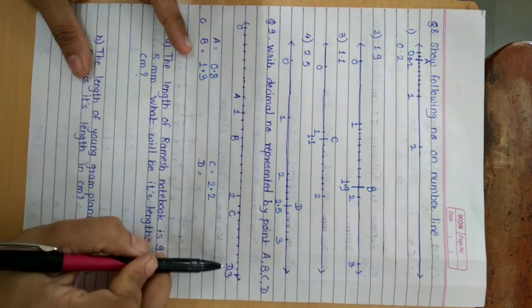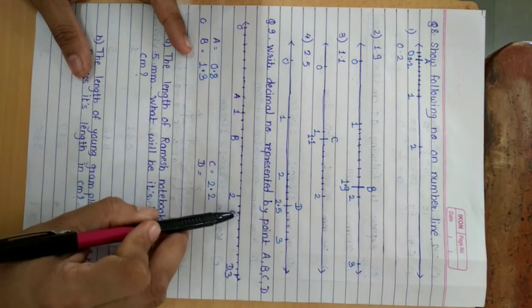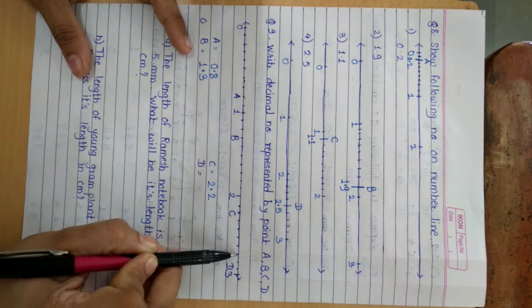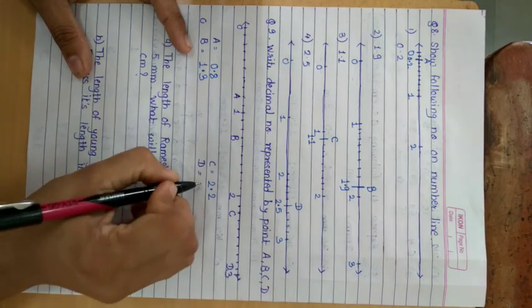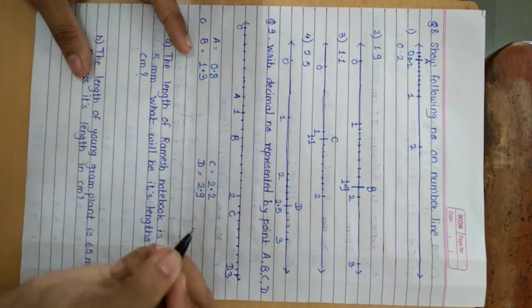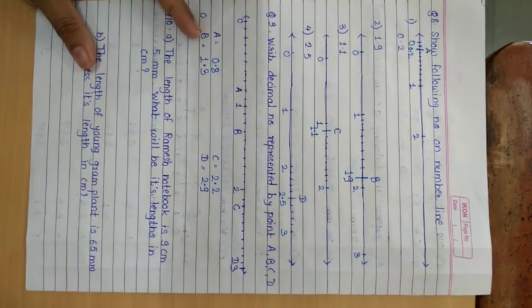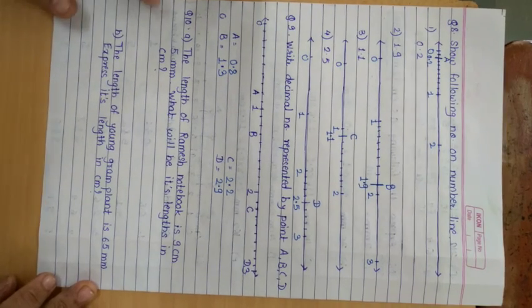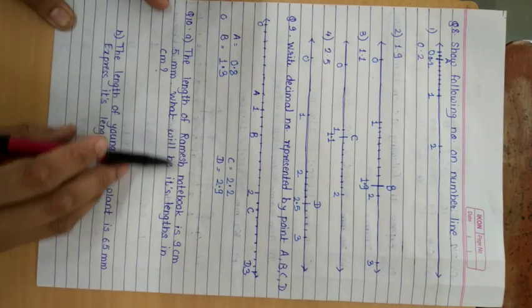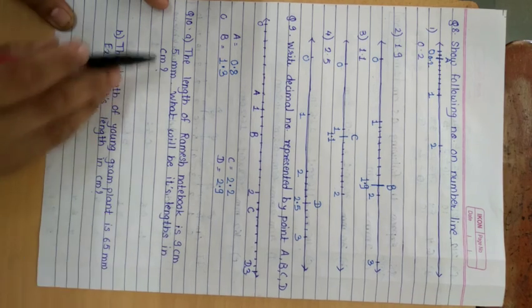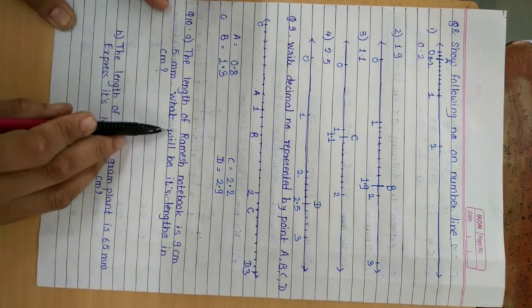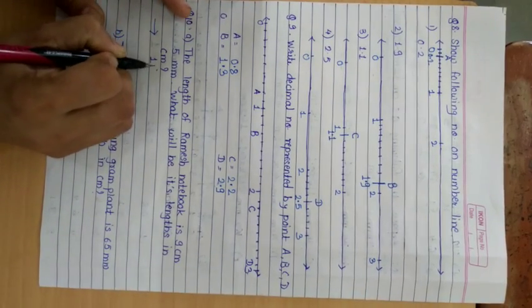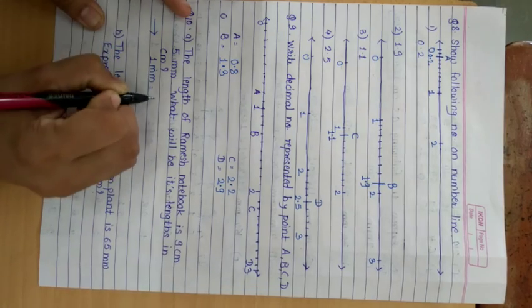And point D lies between 2 and 3 — counting: 2.1, 2.2, 2.3, 2.4, 2.5, 2.6, 2.7, 2.8, 2.9. So point D will be shown by 2.9. Is it easy? Now we will go to the last question of this exercise: The length of Ramesh's notebook is 9 cm and 5 mm. What will be its length in cm? We know that 1 mm is equal to 0.1.